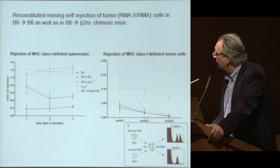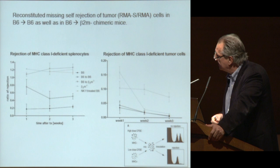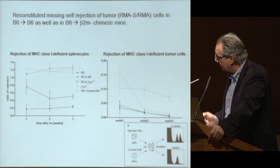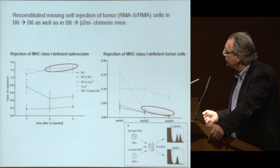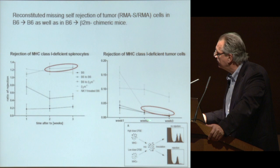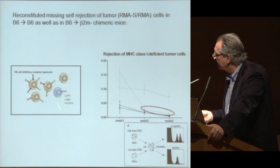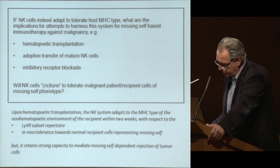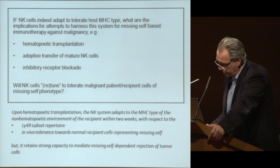This is sort of bad news if you want to use this to kill class 1-deficient tumor cells of the recipient phenotype. But the good news is that if you now do the same assay with tumor cells — using those tumor cell pairs that we initially studied with Philippe — you can see a big difference. The NK cells transplanted to the beta-2 microglobulin-deficient environment cannot react to beta-2m-deficient spleen cells, but they happily and quite efficiently react to class 1-deficient tumor cells. The repertoire has also adapted to the class 1-deficient environment already at week two. The conclusion is that we get adaptation and in vivo tolerance towards recipient cells, but only towards normal recipient cells — the NK cells retain strong capacity to mediate missing self-recognition when challenged with tumor cells.